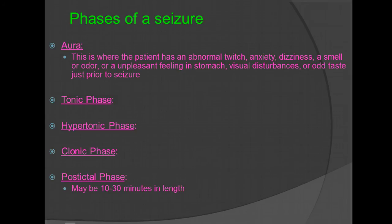In the phases of the seizure, you will have the aura phase, where the patient has an abnormal twitch, anxiety, dizziness, a smell or odor, an unpleasant feeling in the stomach, visual disturbances, or an odd taste just prior to the seizure. They've also been known to have incontinence and tongue biting. Then there's the tonic phase, which is muscle rigidity, and the hypertonic phase, an extreme case with back arching. The clonic phase is the jerking phase of the seizure. The post-ictal phase lasts 10 to 30 minutes.